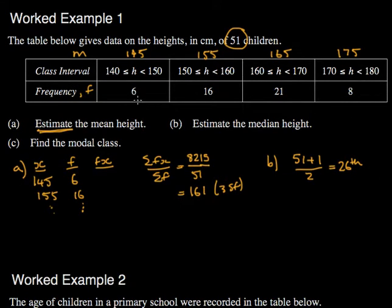So the 26th value would have to lie not in this one, there are 6 people. And then here there are a further 16, which makes 22 people so far. Therefore, the 26th person must have laid in this particular class interval.